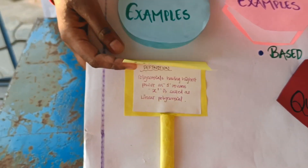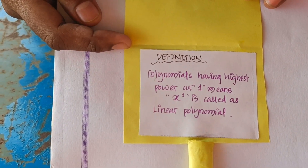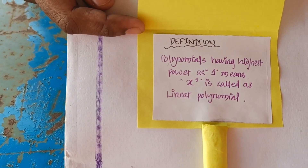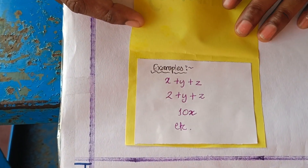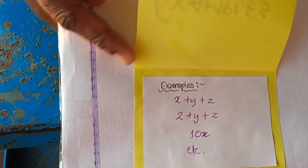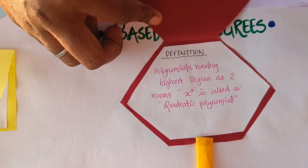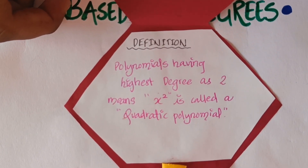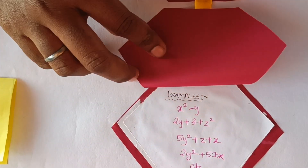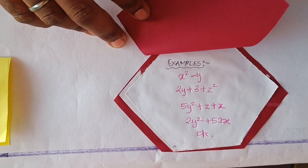First is linear polynomial. A polynomial of degree one is a linear polynomial. For example, x plus y plus z. Second is quadratic polynomial — a polynomial in which the highest power is two. For example, seven x minus two y squared, and x squared minus y.